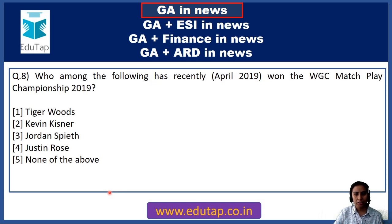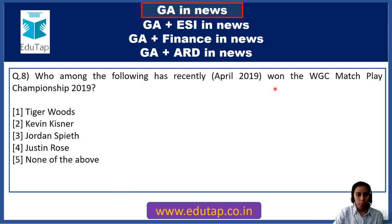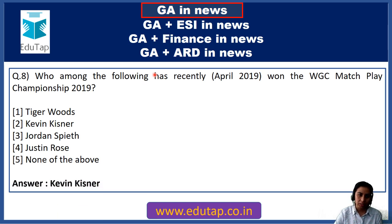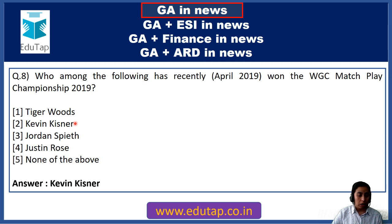Question 8: Who among the following has recently won the WGC Match Play Championship 2019? The answer is option 2, Kevin Kisner. Do make a note of these things and revise your current affairs so that you are able to recall when it is important.